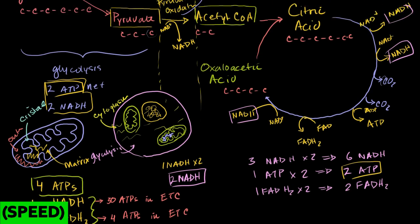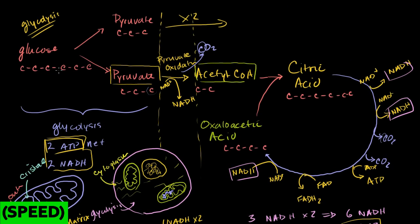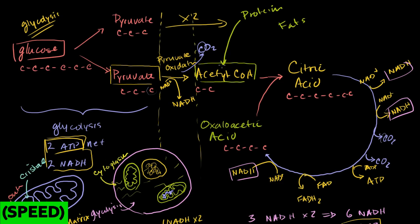Everything we've talked about so far is carbohydrate metabolism, or sugar catabolism — breaking down sugars to produce ATP, with glucose as our starting point. But animals, including us, can catabolize proteins and fats. Proteins can be broken down into amino acids and then into acetyl-CoA. Fats can be turned into glucose in the liver. The big picture is that acetyl-CoA is the general catabolic intermediary that can enter the Krebs cycle and generate ATP regardless of whether our fuel is carbohydrates, proteins, or fats.